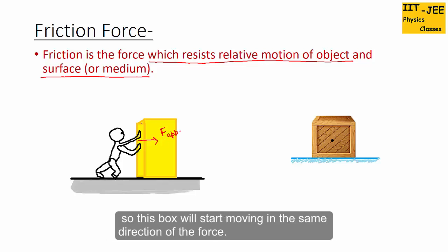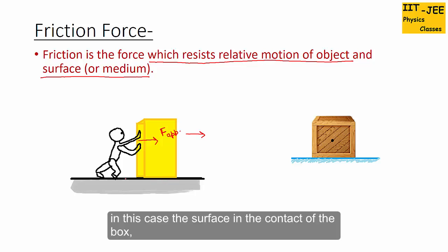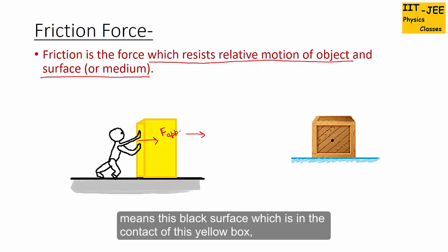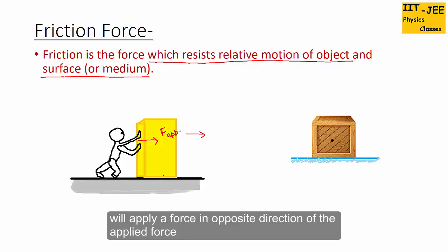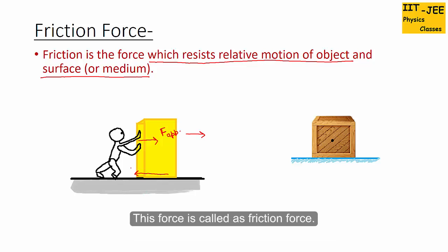The box will start moving in the same direction as the force. The surface in contact with the box — the black surface in contact with the yellow box — will apply a force in the opposite direction of the applied force, or opposite to the motion of the box. This force is called friction force.